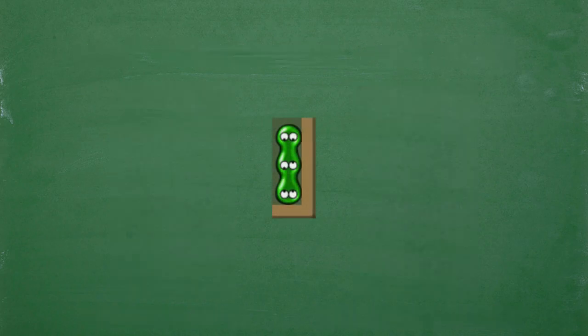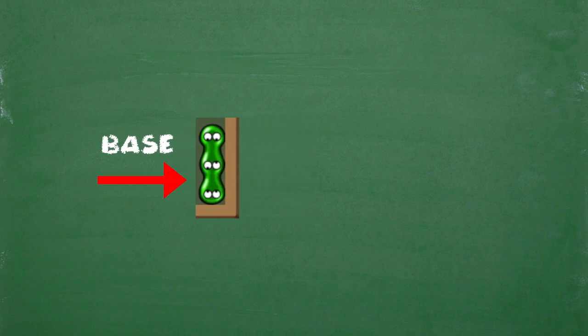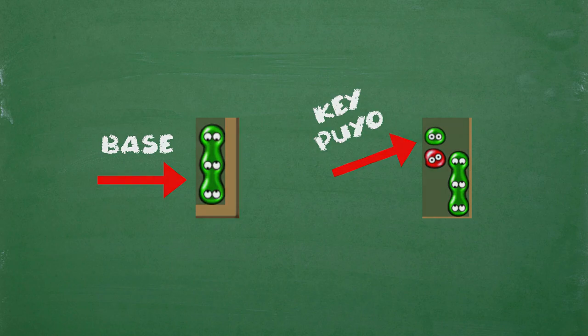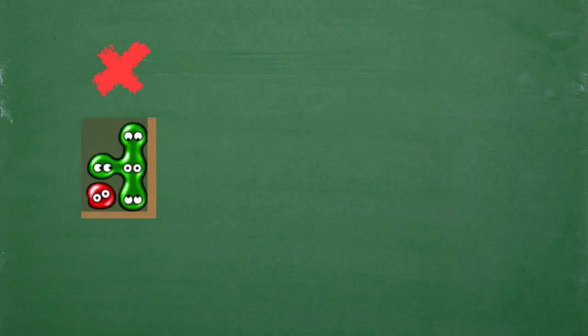First, let's consider the most familiar example. Say we have this group of 3 greens, which we'll call the base, and we want to extend it using the blocking method. The blocking method's main principle is to set up a Puyo such that it is blocked from another group of Puyos to cause it to clear later. Because the green Puyos are stacked vertically, and we want to put the key Puyo somewhere in the column to the left of it, we'll have to put it like this. If we were to put it somewhere lower in this column, it would already connect to one of our 3 greens, and thus we would have to place it higher.